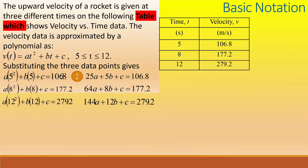Here we present an example of practical importance. The upward velocity of a rocket is given at three different times in the table that shows velocity versus time data. The velocity data is approximated by a polynomial as v(t) = at² + bt + c for a time between 5 and 12 seconds. We have to set up the equations in matrix form to find the coefficients A, B, C of the velocity profile for data fitting.